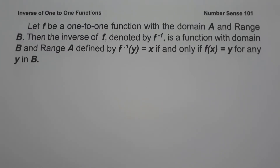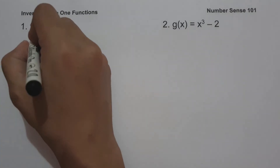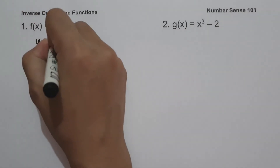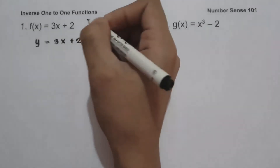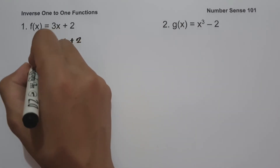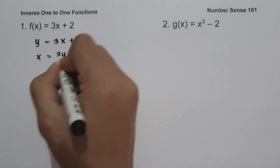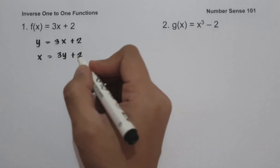Let's start with example number one: f(x) = 3x + 2. To find the inverse of a one-to-one function, the first step is to write the function in the form y = f(x). So the equation is y = 3x + 2. Then let us interchange the x and y variables — y becomes x and x becomes y — giving us x = 3y + 2.